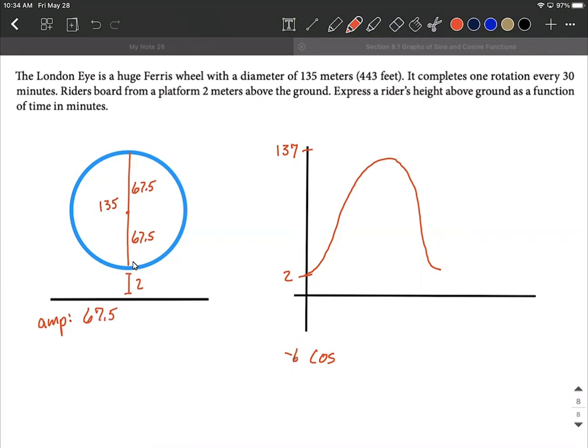So we can say our amplitude is 67.5. But I'm going to make that a negative 67.5 to go out in front here to indicate that it's been vertically reflected and flipped upside down from our normal cosine graph. Okay, so we've got that number out in front.